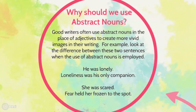Let's look at the difference between two sentences and think about which one is more vivid and imaginative, which one creates a better image in the reader's mind. We've got 'he was lonely' versus 'loneliness was his only companion,' and 'she was scared' versus 'fear held her frozen to the spot.' The image of loneliness being his only companion creates a much more vivid and imaginative picture in the reader's mind — far more effective than just saying 'he was lonely.' It's definitely worth thinking about how you can use abstract nouns to make your writing more effective.